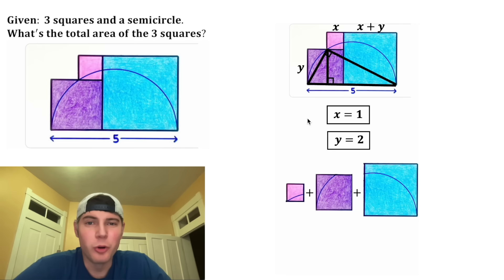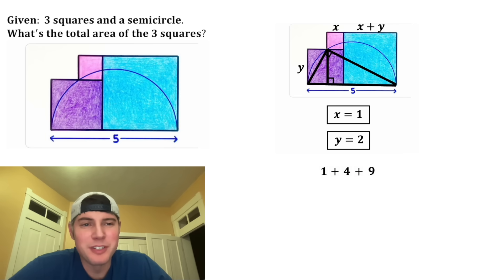And now we're ready to find the total area of these three squares. The sides of these squares are X, Y, and X plus Y, where the X's are equal to 1 and the Y's are equal to 2. Our side lengths are 1, 2, and 3. So the areas are going to be 1, 4, and 9. And 1 plus 4 plus 9 is equal to 14. So the answer to this question, what is the total area of these three squares, is 14 square units.